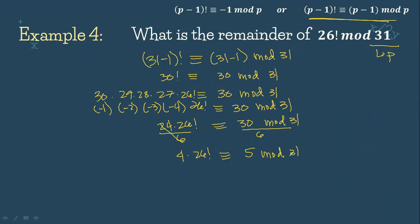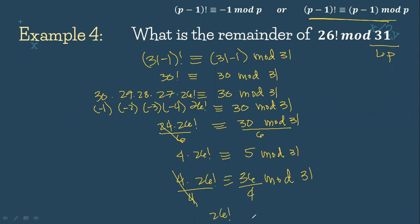Adding 31 to 5 gives us 36, and 36 is also divisible by 4, so we can cancel. We have 36 mod 31; dividing both sides by 4, 26 factorial is congruent to 9 mod 31. So our answer is 9.